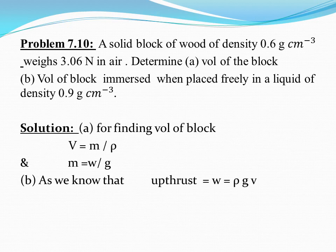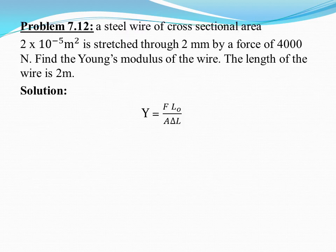Problem 7.10: A solid block of wood of density 0.6 g/cm³ weighs 3.06 N in air. (a) Determine the volume of the block using V = m/ρ, where m = W/g. (b) Find the volume of the block immersed when placed freely in a liquid of density 0.9 g/cm³, using the relation that upthrust equals weight: ρgV_submerged = W.